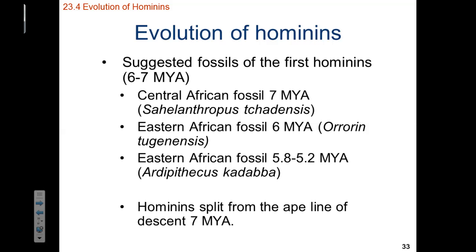The first hominins appear within the fossil record somewhere between six and seven million years ago, depending on how accurate the radiometric dating is. We have found Central African fossils seven million years ago, and East African fossils from 5.8 to 5.2 million years ago. Some of these fossils include Sahelanthropus tchadensis, Orrorin tugenensis, or Ardipithecus kadabba. These hominins split from the line of apes approximately seven million years ago, and they are found in Africa — found in Africa, found in Africa.